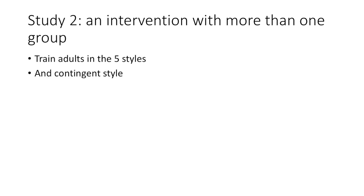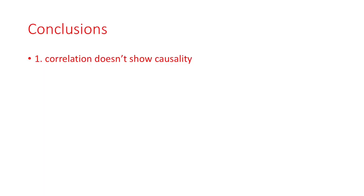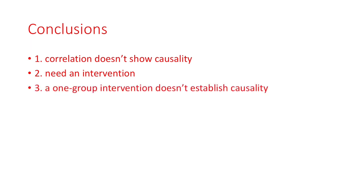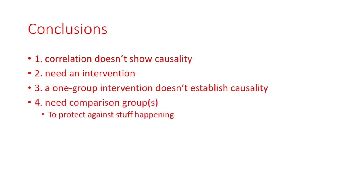What David Wood did do was an intervention with more than one group. He trained people in each of the five different styles and in the contingent style, then observed what happened when they worked with children. As before, the contingent style was the best, and you could transfer it to other tasks. So my conclusions are: correlation doesn't show causality — you were taught that in year one. Even sophisticated methods like multi-level modelling don't necessarily demonstrate causality; you need an intervention. But a one-group intervention doesn't establish causality either — you need a comparison group to protect against outside influences.